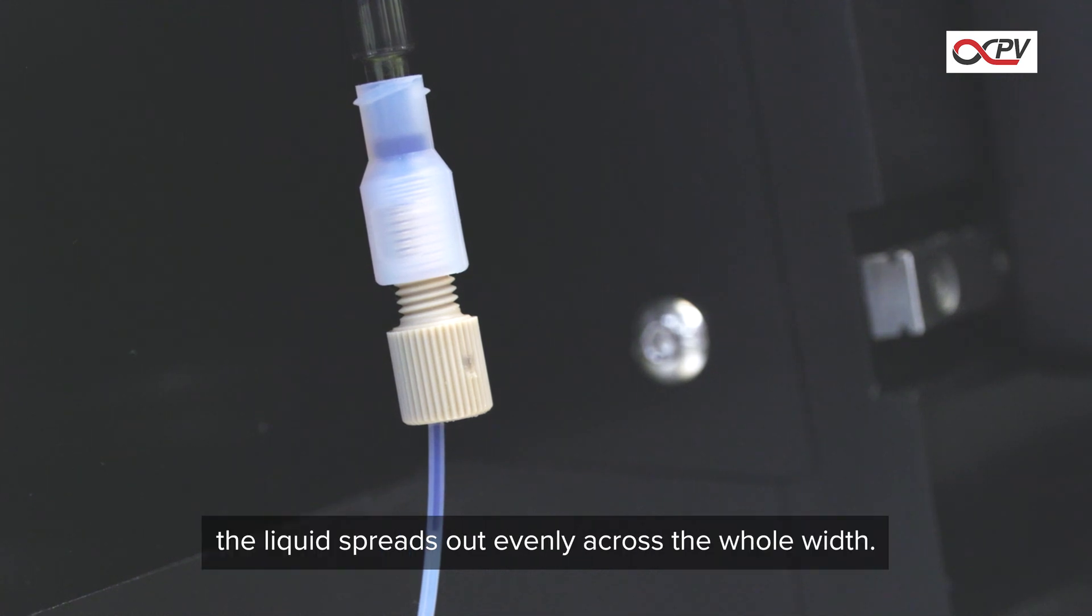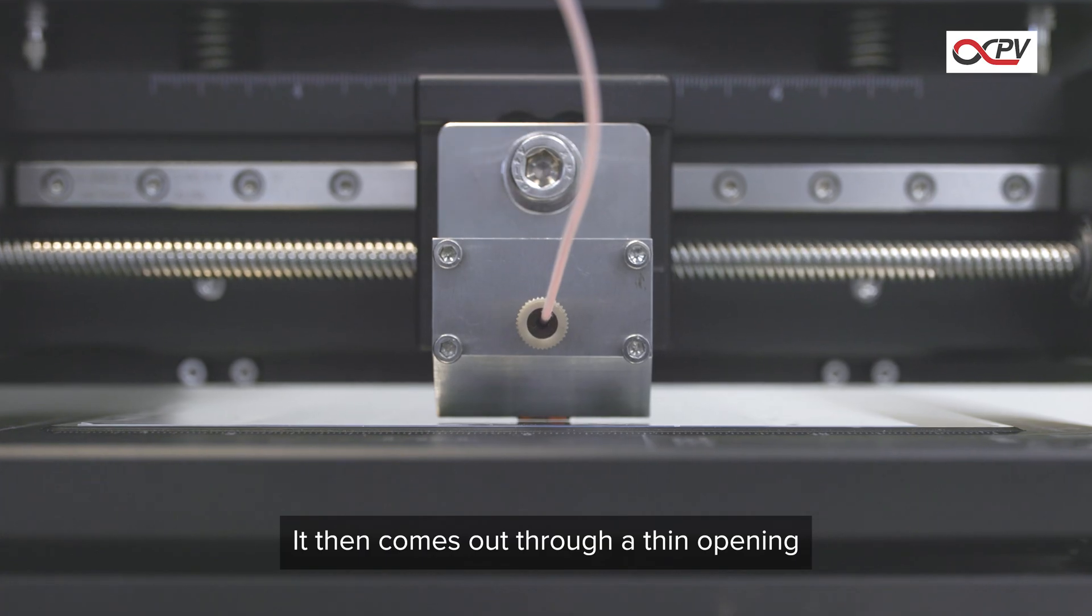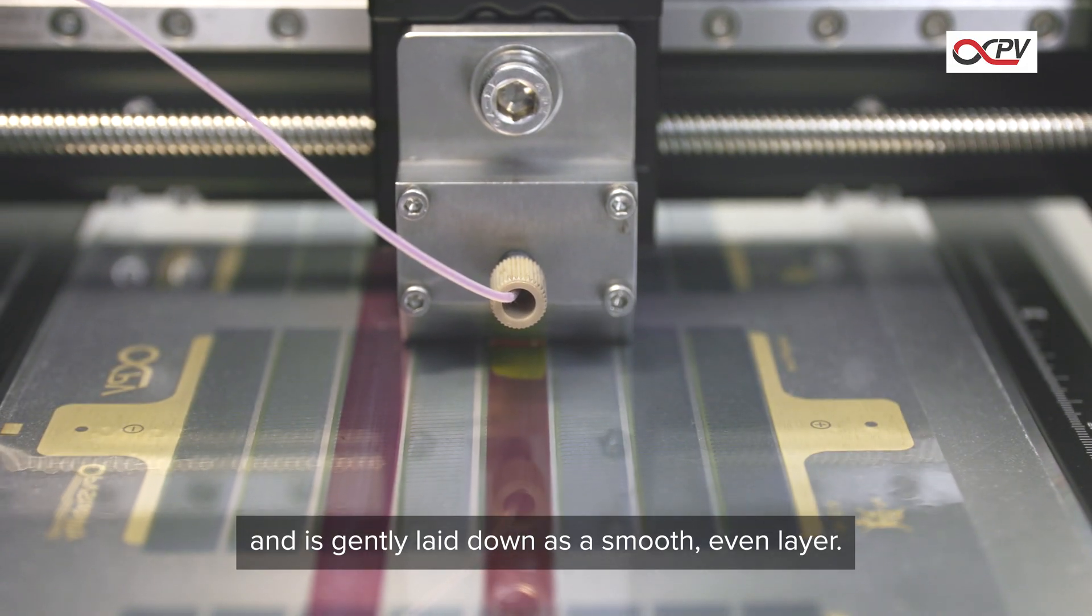Inside the slot die head, the liquid spreads out evenly across the whole width. It then comes out through a thin opening and is gently laid down as a smooth, even layer.